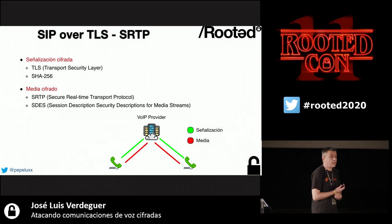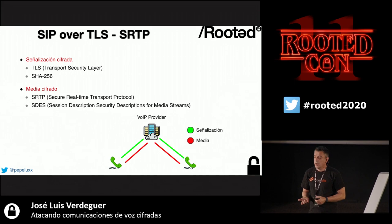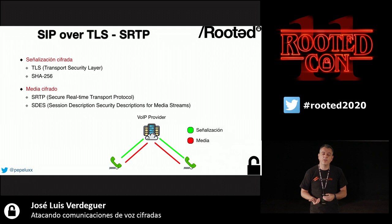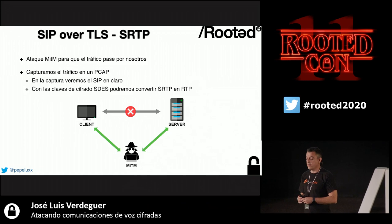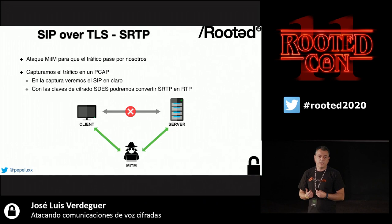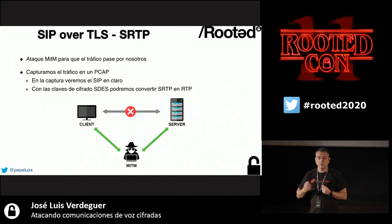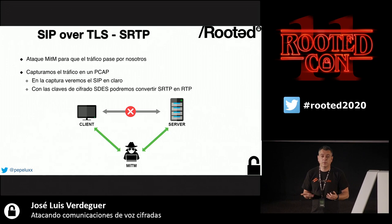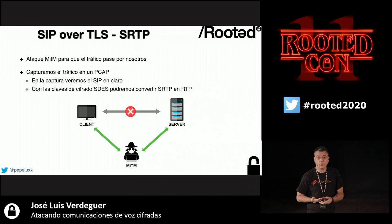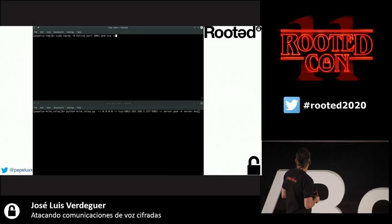In the fourth case — both signaling and media encrypted — passive traffic capture reveals nothing. Audio is encrypted and signaling is encrypted, so encryption keys cannot be seen. The attack here requires a man-in-the-middle: intercept the signaling so the caller registers through us, creating two encrypted TLS channels. We connect the client to us and we connect to the server, obtaining the SDES key and decrypting the audio.